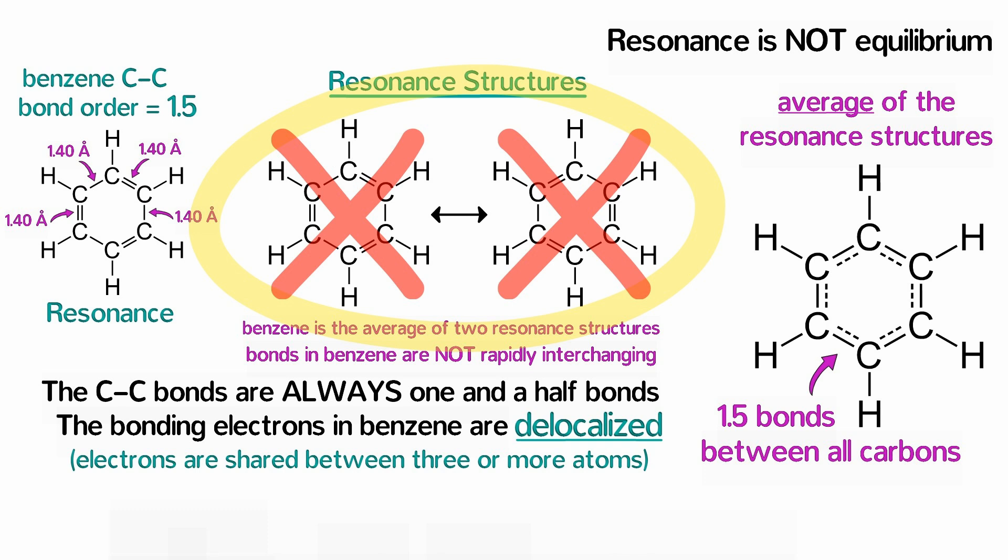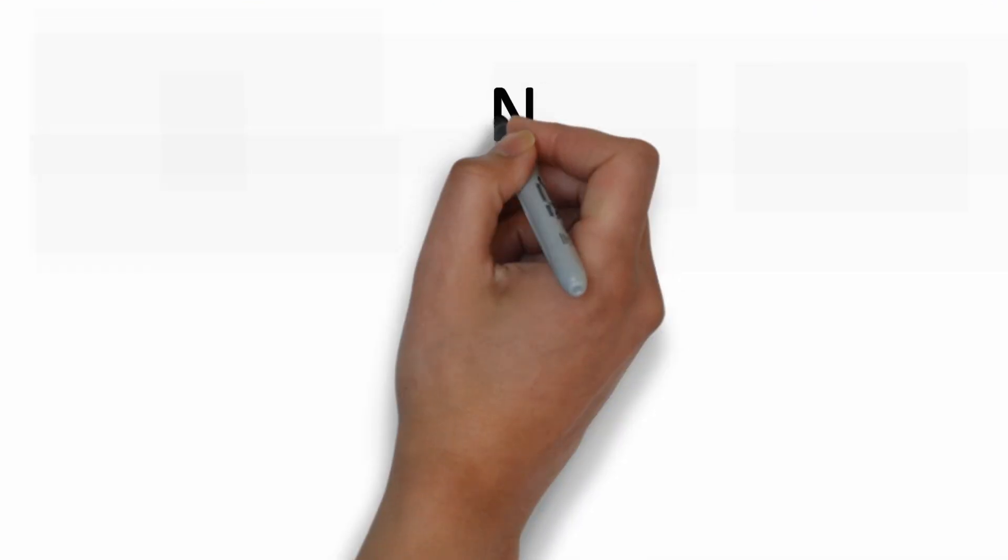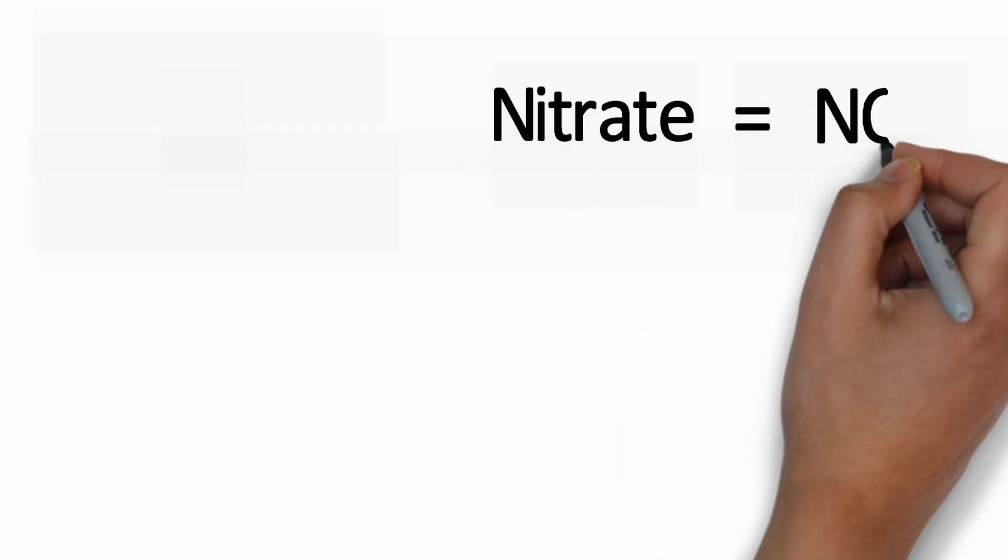Now, while I could go on about benzene's special properties, I would rather take this time to show you other molecules and ions that exhibit resonance. In fact, resonance is actually very common in chemistry. So next, consider the polyatomic ion nitrate, NO3-.